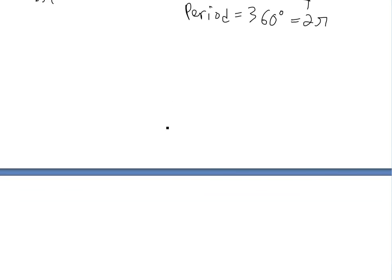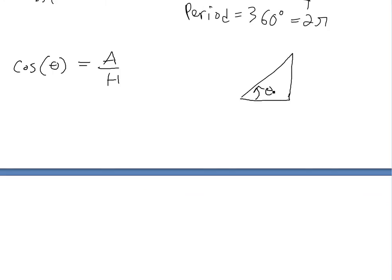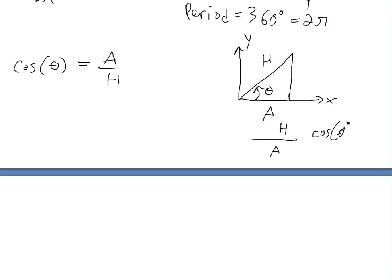Now let's look at a cosine graph. Cosine theta is just adjacent over hypotenuse. If you look at that triangle again — this is theta, this is x, this is y, and this is h — when it's horizontal, h and adjacent equal one, so the ratio equals one. Cosine of 0 equals 1. When it's vertical, adjacent is zero, so it's going to equal zero.